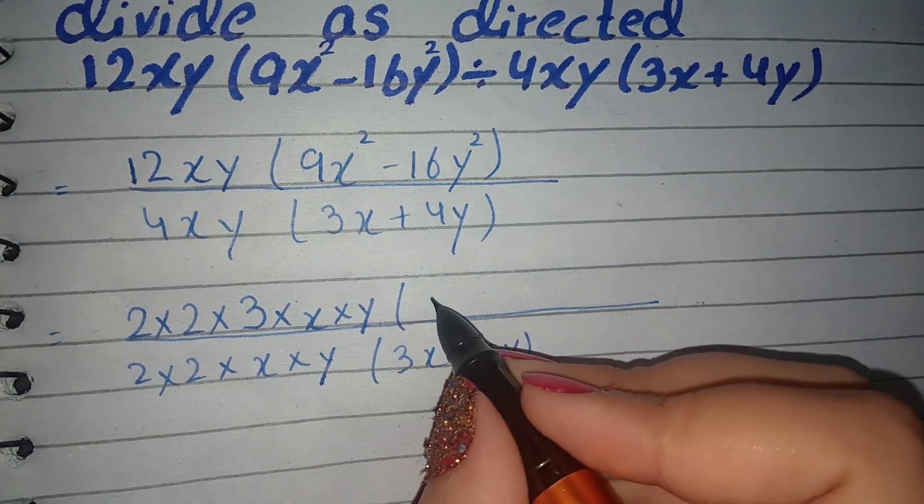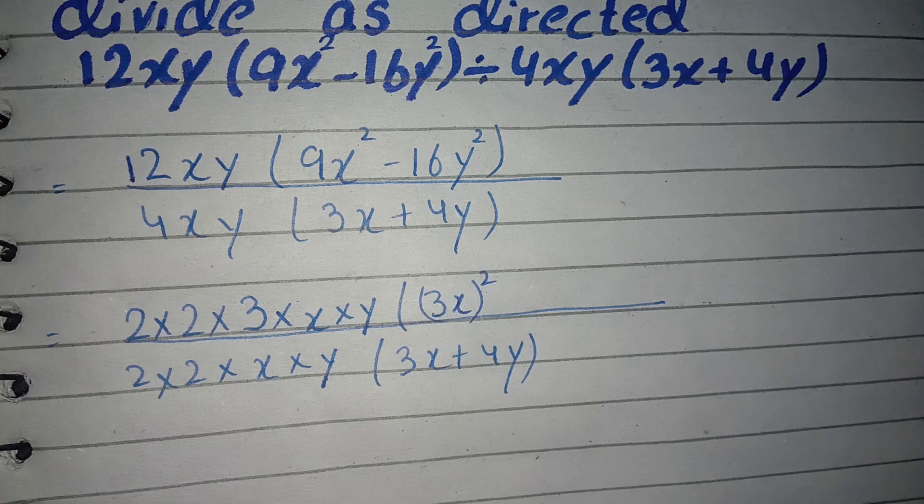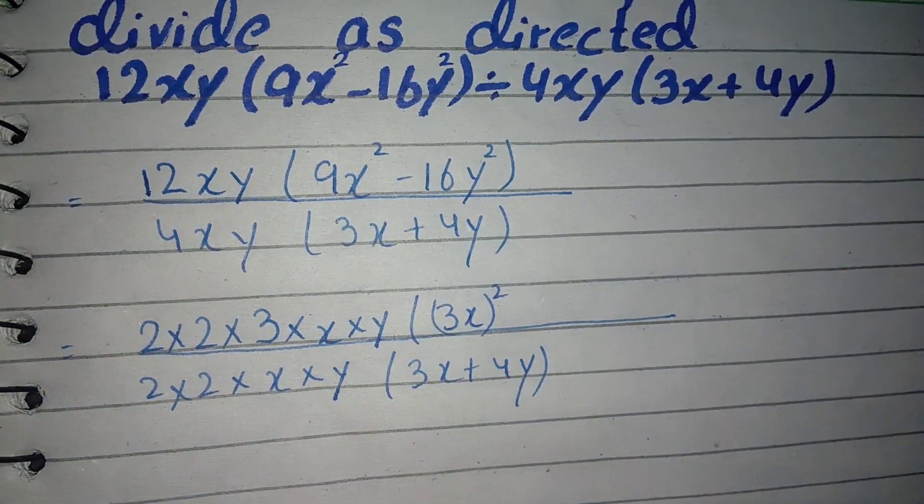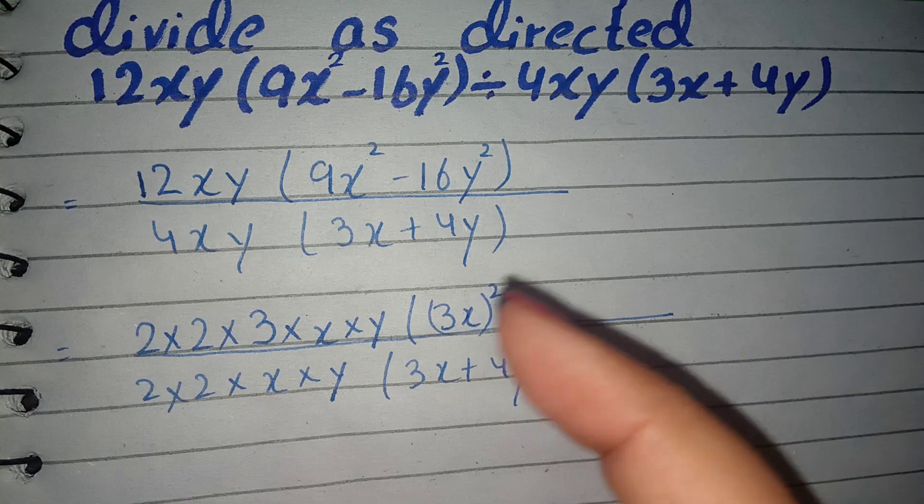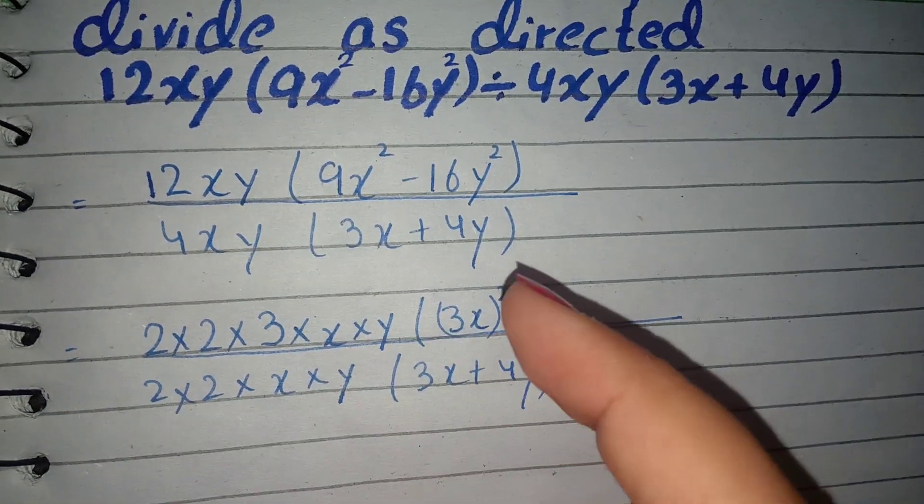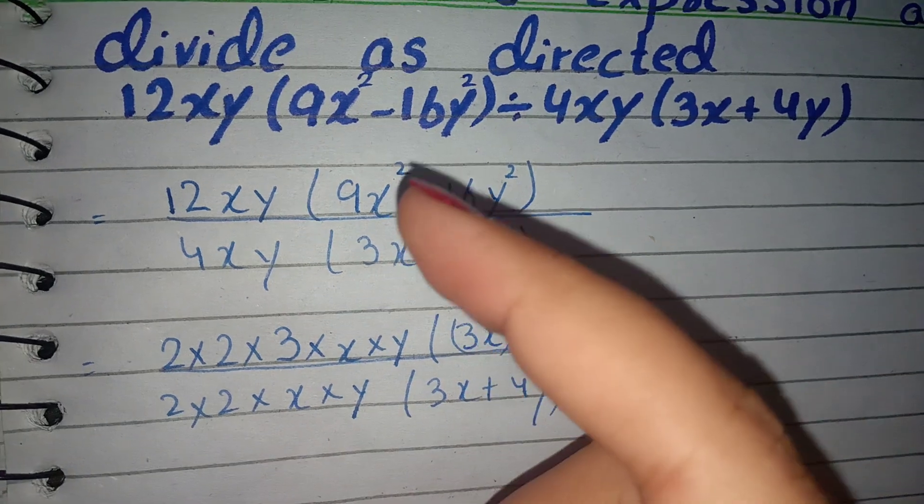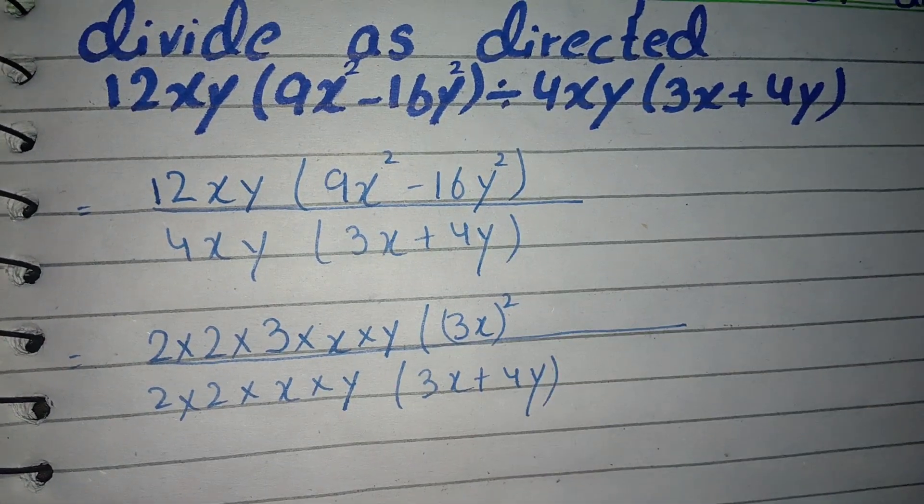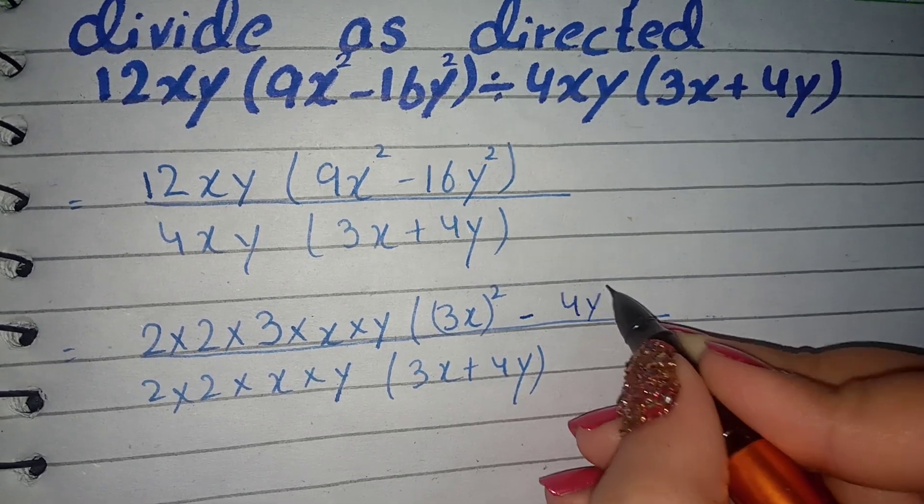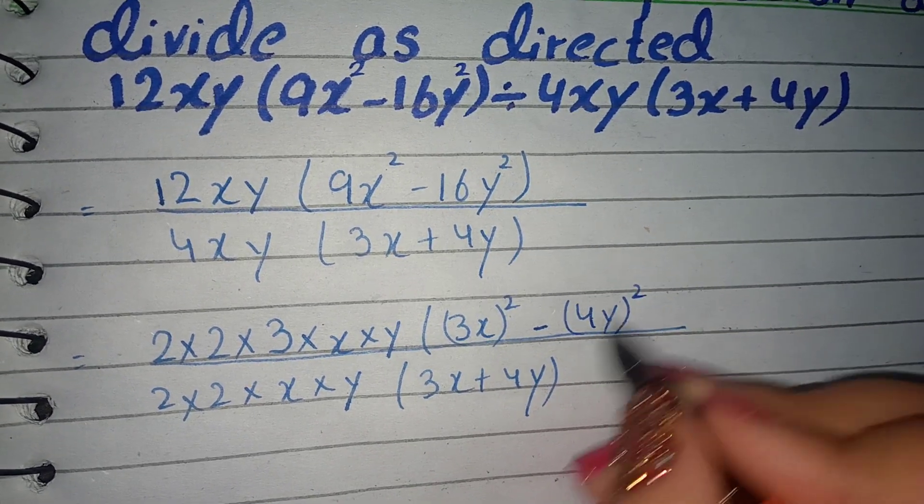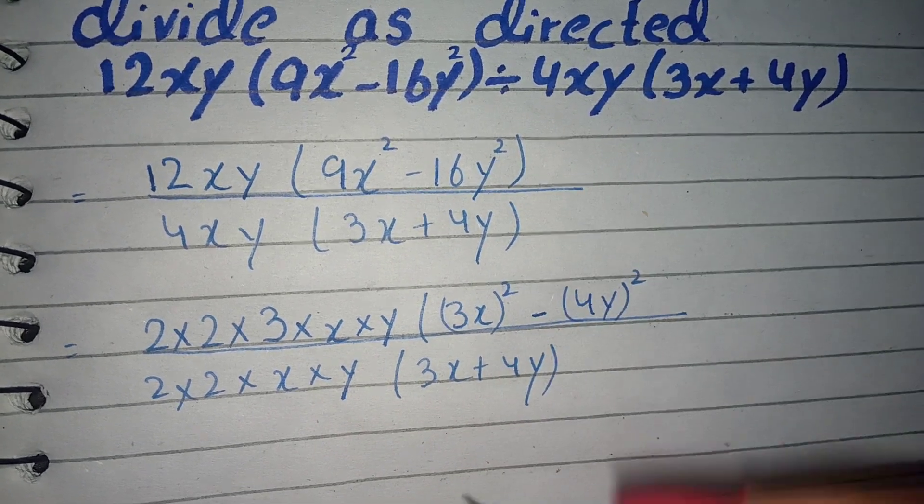2 multiplied by 2 multiplied by 3 multiplied by x multiplied by y. If I write here 3x whole square, because 9x square equals 3x whole square. And I can write here minus 16y square, which equals 4y whole square, because 4 square is 16 and y square is y square.